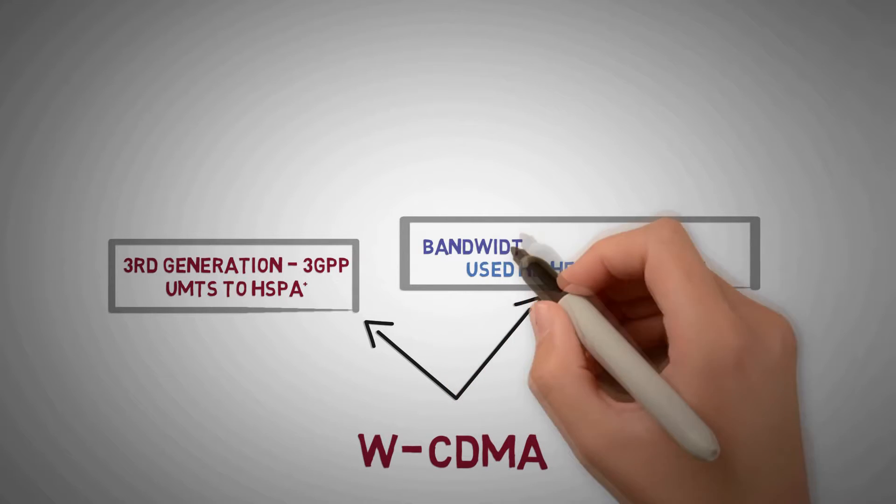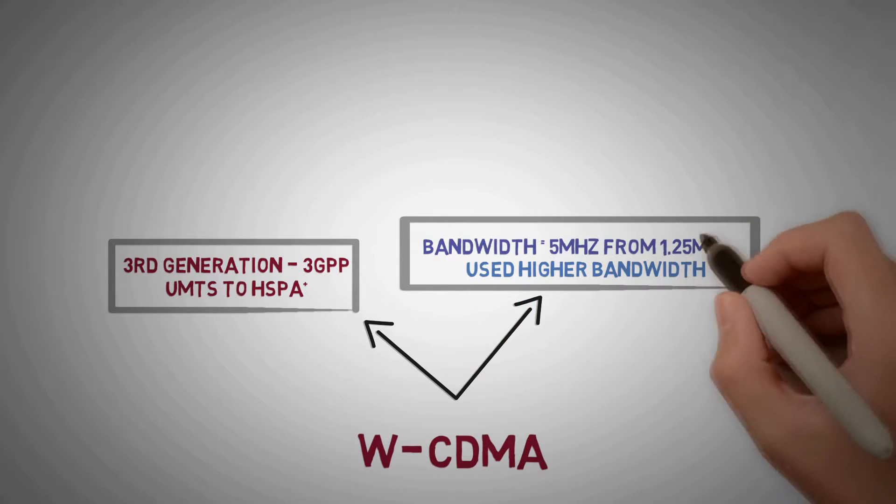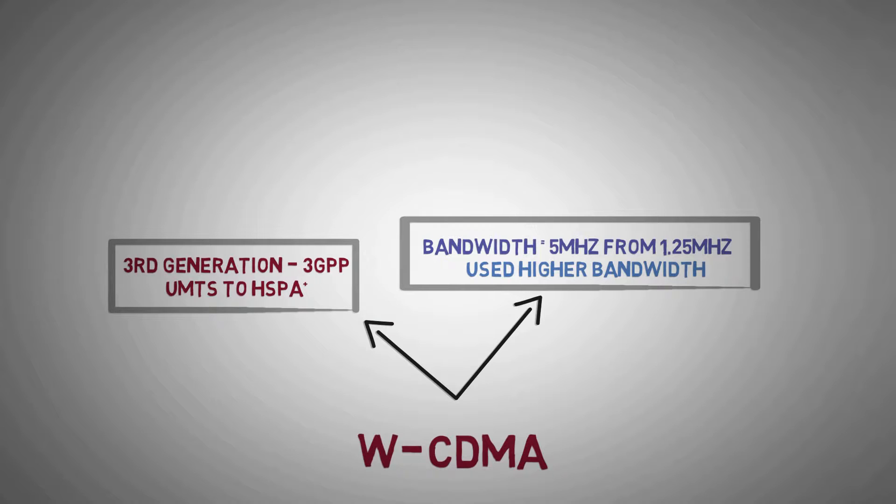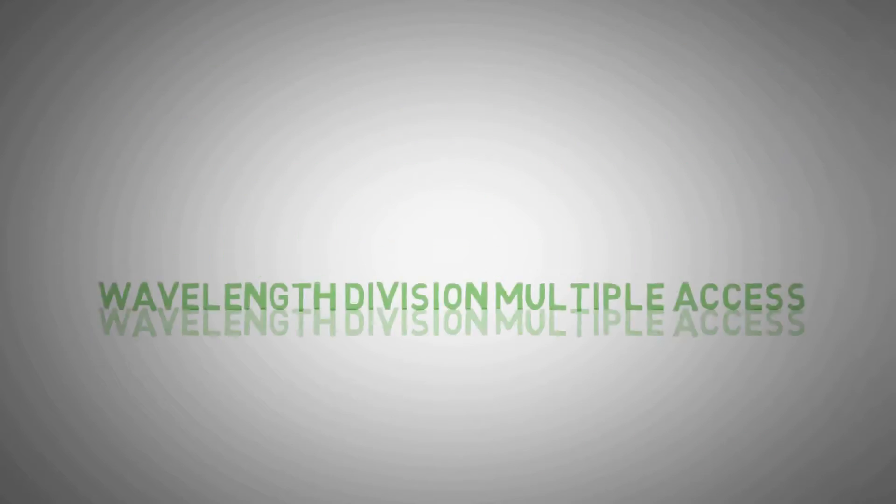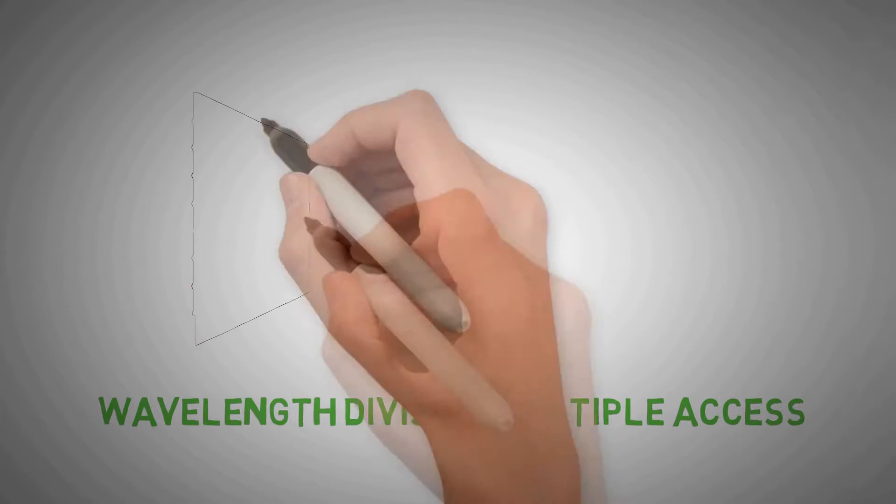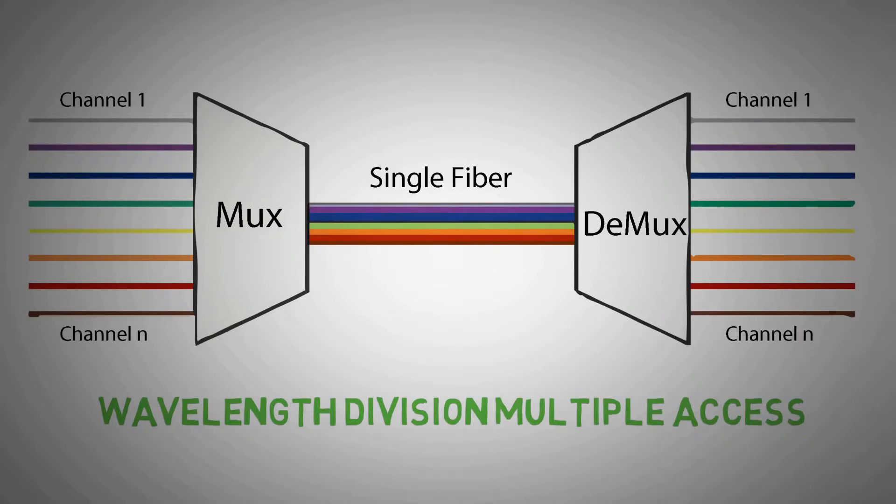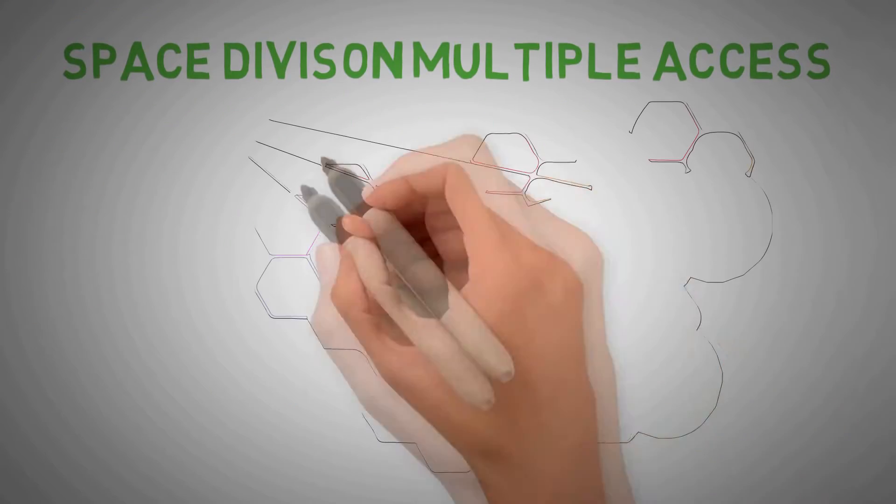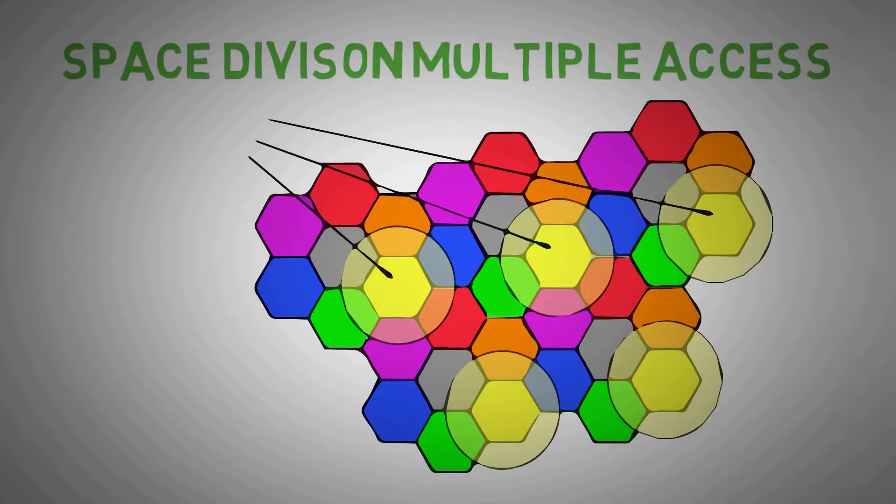Where the available bandwidth was 5 MHz compared to 1.25 MHz used in CDMA. There are other multiple access techniques like Wavelength Division Multiple Access which is used in fiber optics, and Space Division Multiple Access which refers to spectrum reuse over non-overlapping areas.